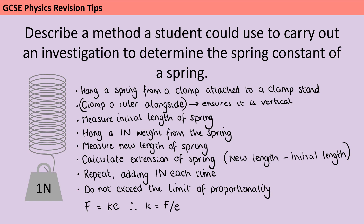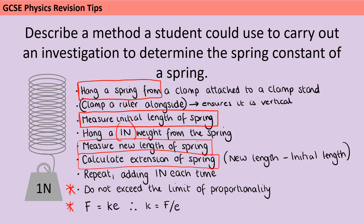So let's look at what you would actually have to include to get your six marks. You need to have hung the spring off something — in class you probably used a clamp, but any hook would do. You need to have measured an initial length, then added some kind of force — it doesn't necessarily need to be one newton. Then measure the new lengths to calculate the extension. As long as you've said you must not exceed the limit of proportionality, or made three different measurements to demonstrate the gradient is always the same, you don't need to include adding lots of masses. So: hanging the spring, measuring the initial length, adding some weights, measuring the new length, calculating the extension, not exceeding the limit of proportionality, and stating what you'd do with that data — that would be sufficient to get your six marks.